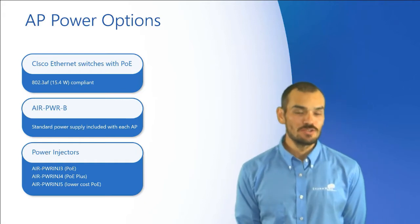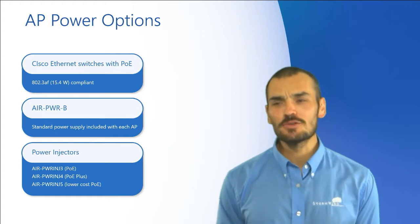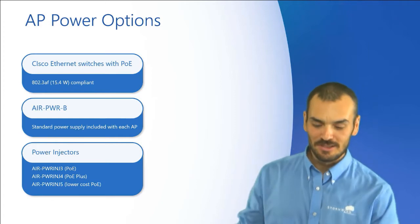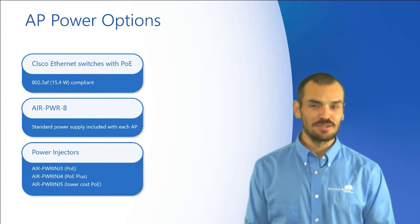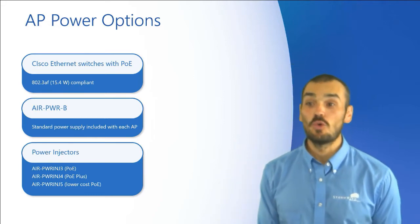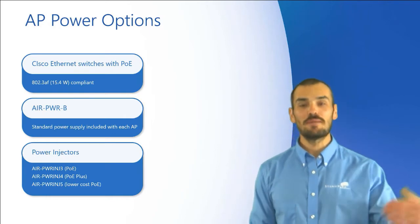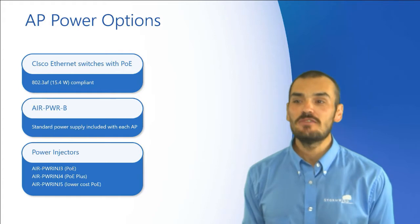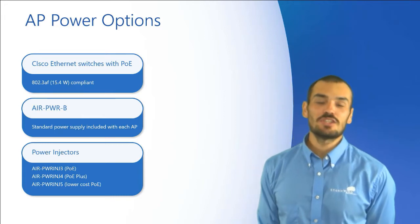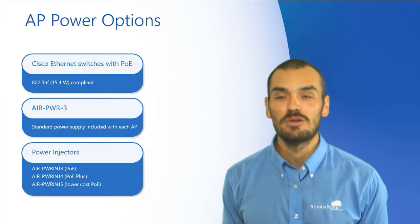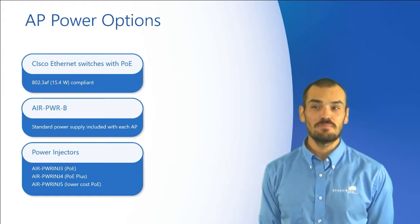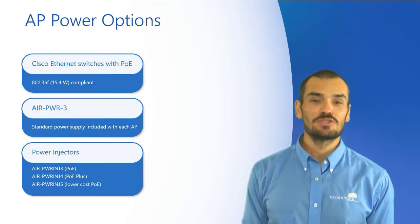We have those power injectors. These models all provide Cisco proprietary versions of POE. We have the J3, the J4, the J5. J3 is for standard POE. J4 is for POE Plus, ramping up to 30 watts. J5 is a lower-cost POE — it actually only has the ability to go up to 15.4 watts. The J3 and J4 are primarily designed with the 3600 series in mind, while J5 can be used on almost any access point.